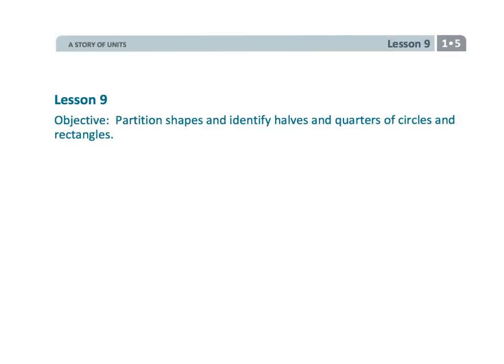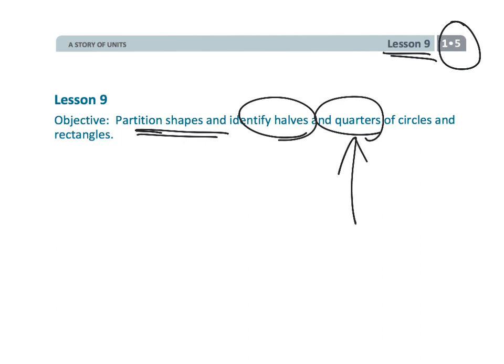And that wraps up a fun one. That was first grade, module five, lesson nine. We're partitioning shapes. We're still dealing with halves and quarters, although we just introduced a new word, fourths. We're still doing circles and rectangles, but we've introduced the idea of comparison.